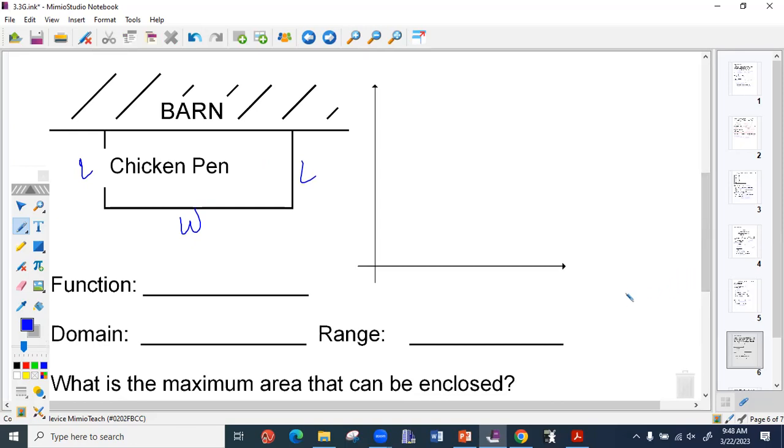That is the perimeter, right? We know that together they have to equal 80. So we have 80 equals 2L plus W.